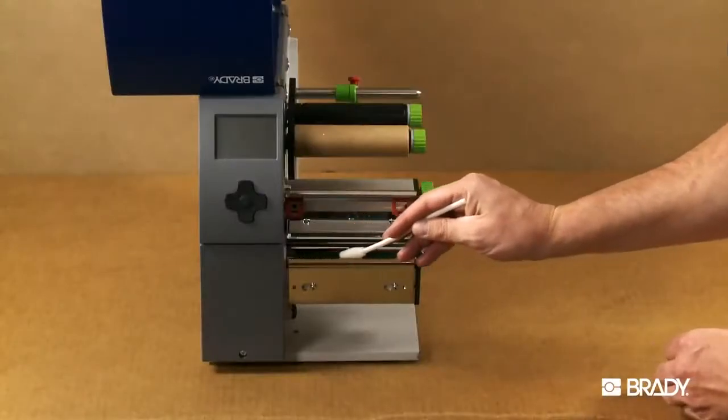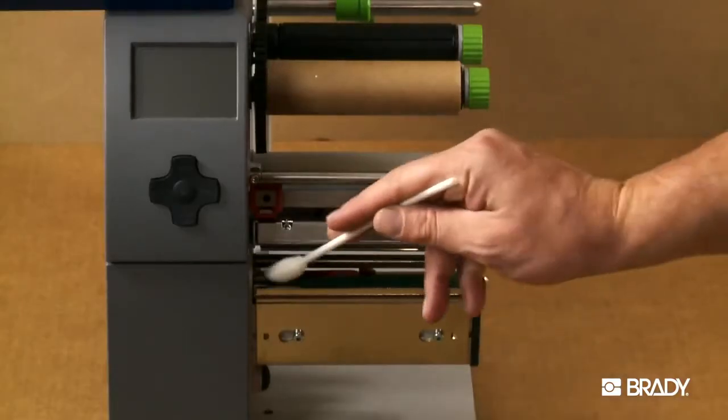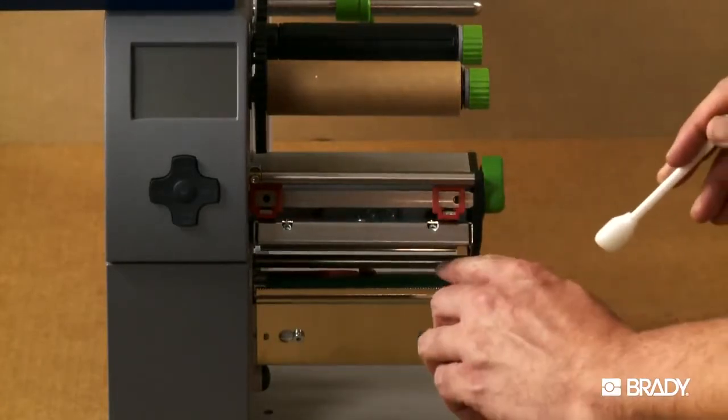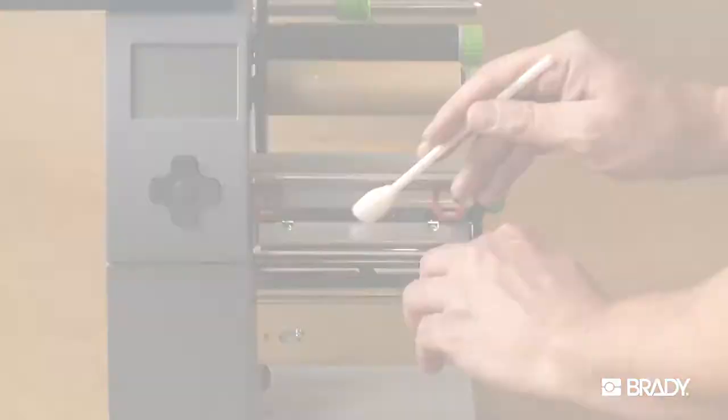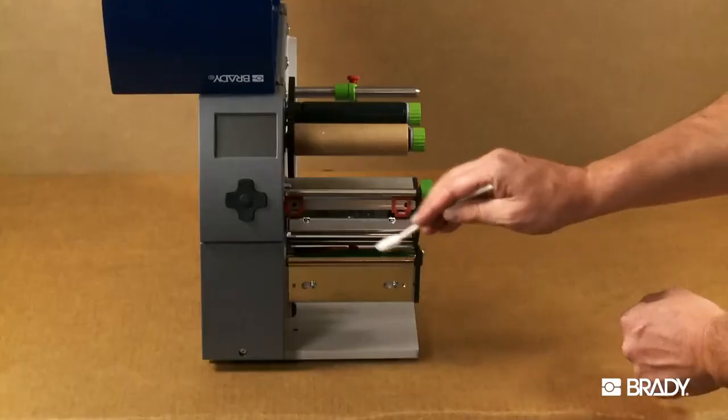Use a clean swab to also wipe down the platen roller. Be sure to get all the way around the roller by using liberal pressure to move the roller manually as you clean. It may be necessary to use canned air to remove any remaining debris from the platen roller once you finish cleaning.